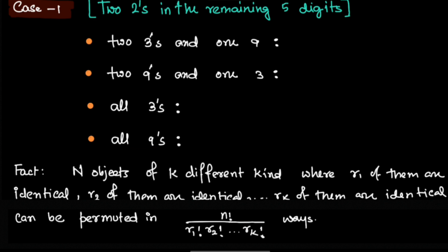Now how many such numbers can be there for this case? Let's say there are two 3s, one 9, and definitely two 2s are there with the last one fixed. We can consider this fact: if n objects of k different kinds are given where r1 of them are identical, r2 of them are identical, up to rk of them are identical, they can be permuted in n factorial over r1 factorial times r2 factorial up to rk factorial ways.